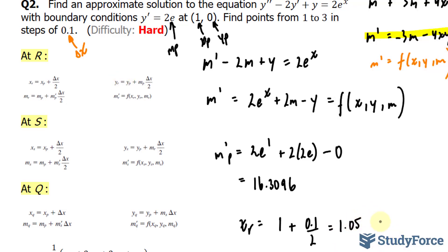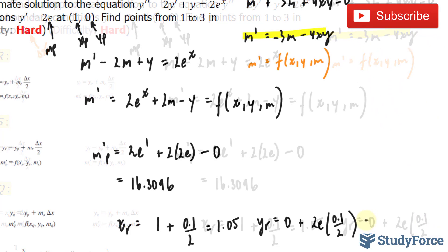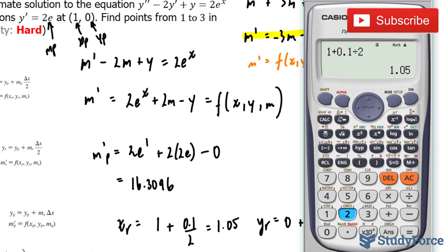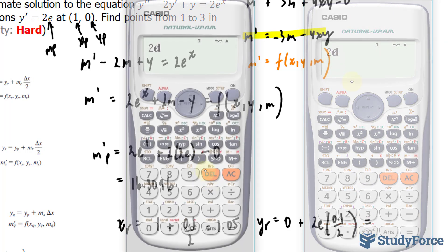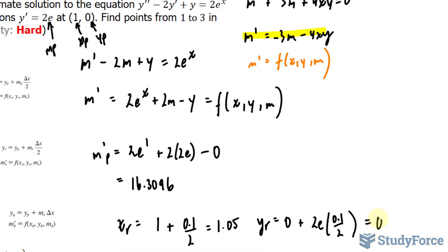Now let's find y_R. According to the formula, we have y_P, which is 0, plus m_P, which is 2e, times 0.1 over 2. Using our calculator, we get 2 times e bracket 0.1 over 2, and this gives us 0.2718.